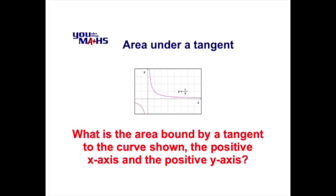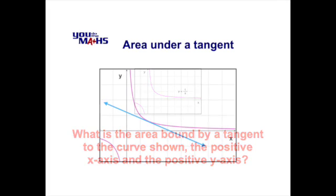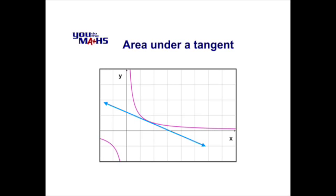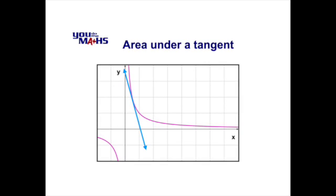Now it doesn't specify the tangent to the curve, so we could have a variety of situations and some of these are shown in these diagrams which display tangents at various gradients to the reciprocal function y equals 1 over x.